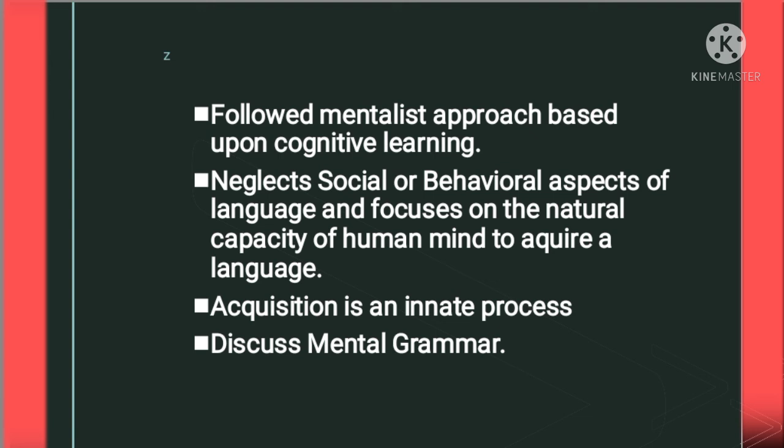In cognitive theory, acquisition is an innate process. Every child learns his native language natively, so it is an innate process. Cognitive theory discusses mental grammar, also known as universal grammar. This is a grammar which is common across the languages of the whole world. For example, there is past, present, and future tense in English, and in the same way it exists in every language of the world. Every language of the world also has verbs and nouns.